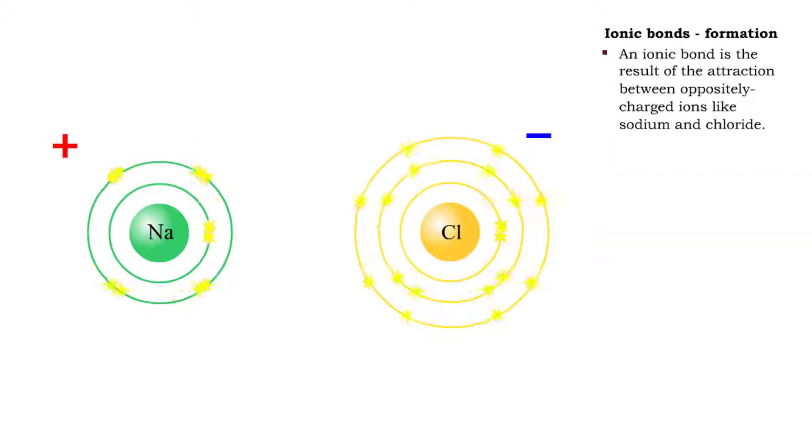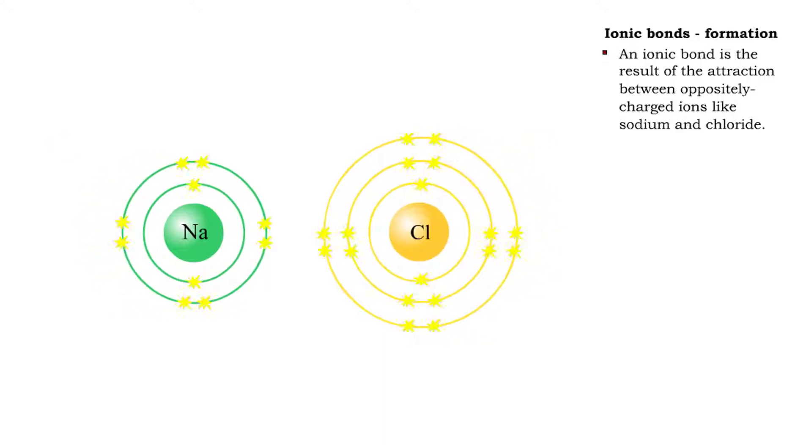The transfer of electrons that formed the sodium and chloride ions gives them opposite charges. The attraction between the opposite charges of the sodium and chloride ions is called an ionic bond.